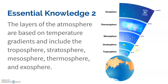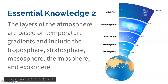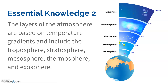You don't need to know the distances, but they're just there to help you see how large the different layers are. They are separated based on their temperature. As you go up through the troposphere it's going to get colder, and then it's going to get warmer, and then colder, and then continue to get really, really warm.